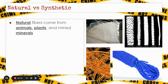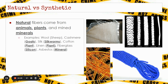Natural fibers are fibers that come from animals, plants, or from mined minerals. Examples of natural fibers would be wool (from sheep), cashmere (from goats), silk (from silkworms), cotton (from a plant), and linen (also from a plant). Fiberglass is also considered a natural fiber — it comes from naturally mined silicon. Asbestos, which could be on a construction worker's clothing, is also a naturally occurring fiber made of different minerals.